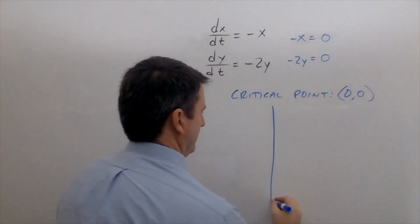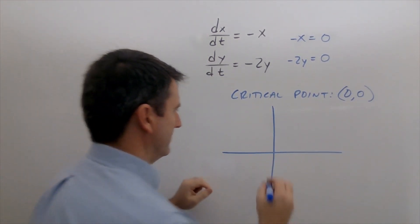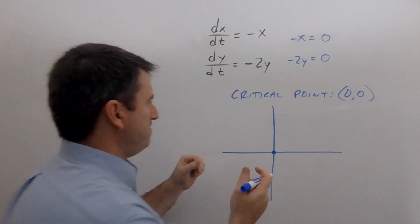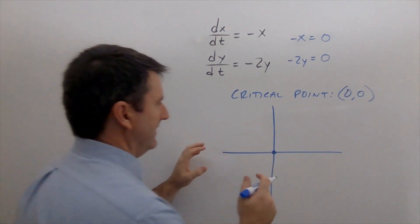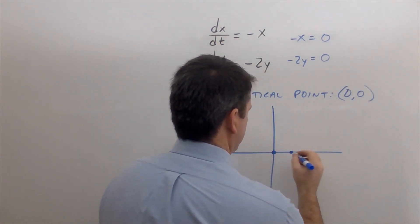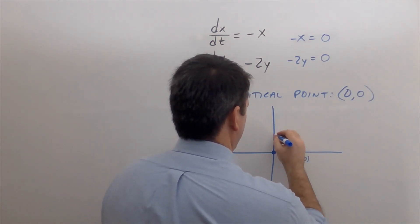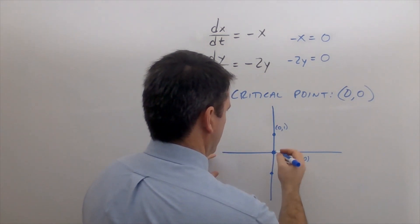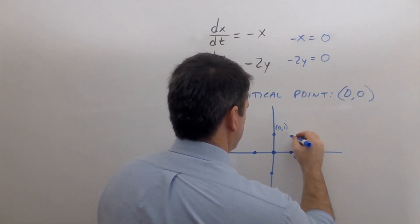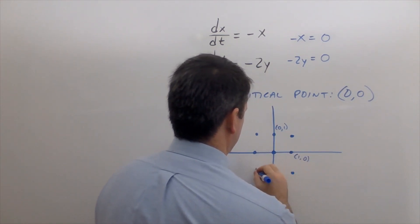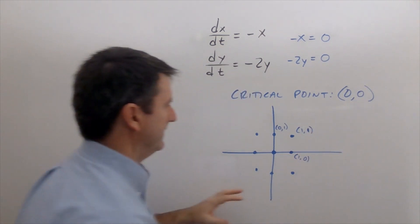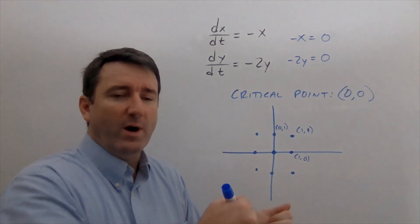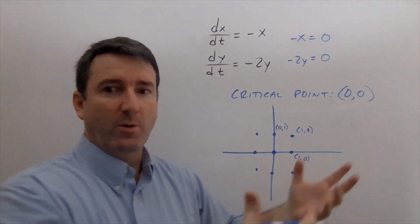Now let's graph what happens around that critical point. We'll take some points near the critical point and draw the trajectories at those various points. Let's take the points (1,0), (0,1), (0,-1), (-1,0), and also the corner points (1,1), etc., find the slope at each of those points, and determine which direction the solution is flowing.